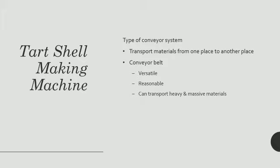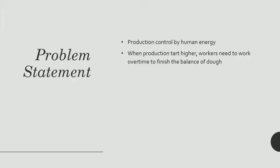For the problem statement, the production is controlled by human energy, so when the production starts, workers need to work overtime to finish the baking of the tart. So the conveyor belt should be installed in the factory and less human energy will be used.